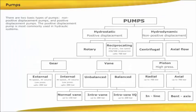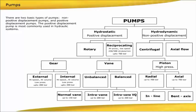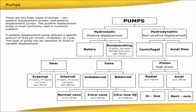There are two basic types of pumps: non-positive displacement pumps and positive displacement pumps. The positive displacement pump is most commonly used in hydraulic systems. A positive displacement pump delivers a specific amount of fluid per stroke, revolution or cycle. This type of pump can be classified as fixed or variable displacement.